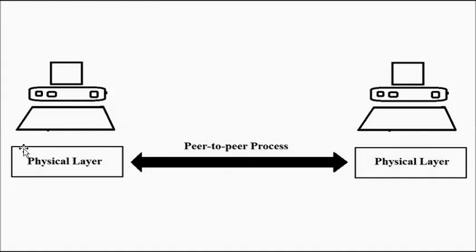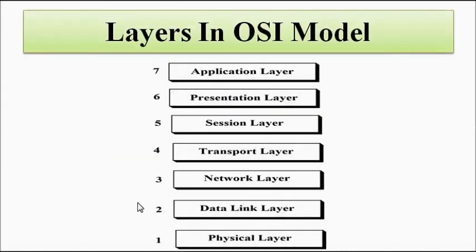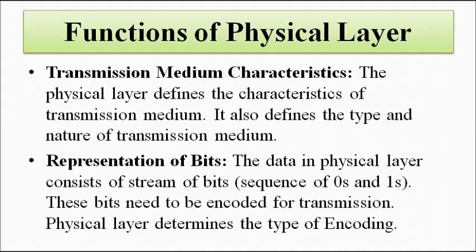Similarly, the data link layer of the source communicates only with the data link layer of the destination; the network layer communicates only with the network layer; the transport layer with the transport layer, and so on. The functions of the physical layer include, first, the transmission medium — its nature and characteristic features, and whether to use copper cables, coaxial cables, twisted pair cables, or optical fibers.